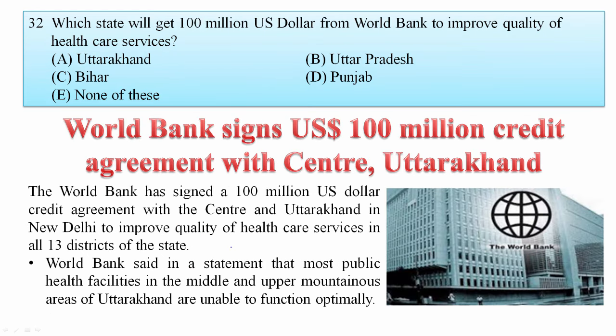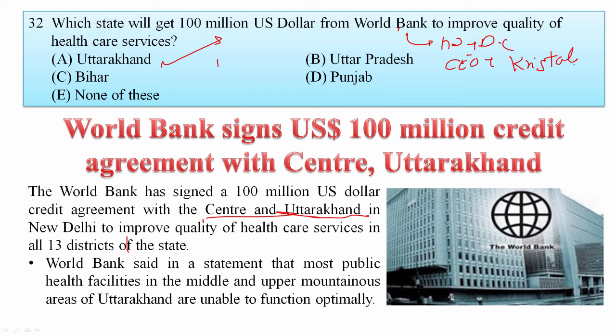Which state will get 100 million USD from the World Bank to improve healthcare services? The World Bank signed a 100 million USD credit agreement with the central government and Uttarakhand to improve quality of healthcare in all 13 districts of the state. The World Bank's headquarters is in Washington DC, and the CEO is Kristalina Georgieva. The organization was founded in 1944. Your answer is A — Uttarakhand.